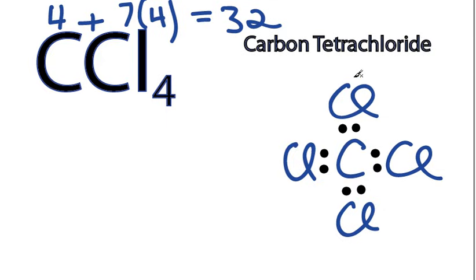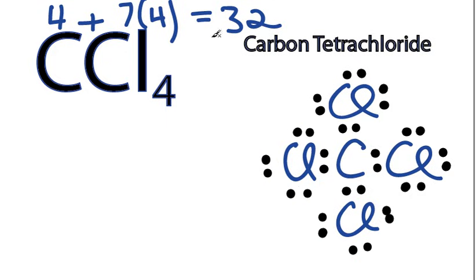Now let's fulfill the octets on the chlorines. So we have 8, 10, 12, 14, 16, 18, 20, 22, 24, 26, 28, 30, and then 32. We've used all 32 valence electrons.